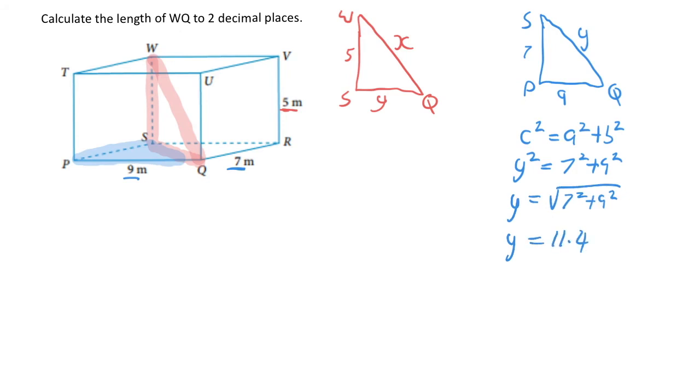Now that I have a value of Y, I can go back to my original triangle and put that in. So my SQ side is going to be 11.4. Now I've got two known sides, I can go ahead and calculate X.